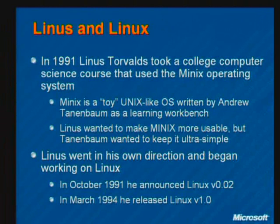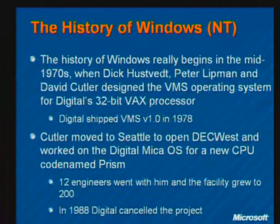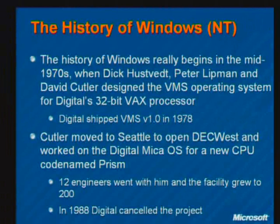In October 1991, he announced Linux version 0.2, and in March 1994 he released version 1.0, the first major version. Now let's turn our attention to Windows NT and talk about its history. If you look at the history of Windows NT, you've got to go back even further than the original release — back to Digital, the company that used to be Digital Equipment Corporation, where in the mid-1970s three people architected an operating system called VMS.